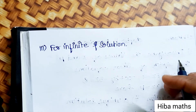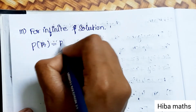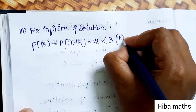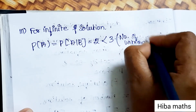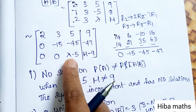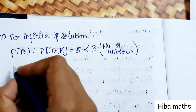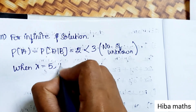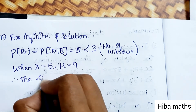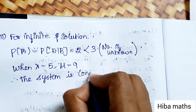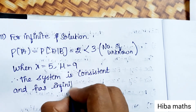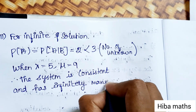The last condition is for infinite solutions. In the infinite solution condition, rank of A = rank of [A|B] = 2, which is less than 3 (the number of unknowns). The last row becomes all zeros when λ = 5 and ν = 9. So when λ = 5 and ν = 9, rank of A = rank of [A|B] = 2, and therefore the system is consistent and has infinitely many solutions.